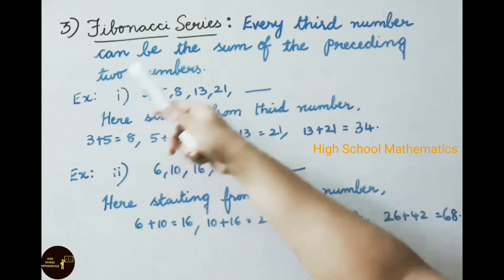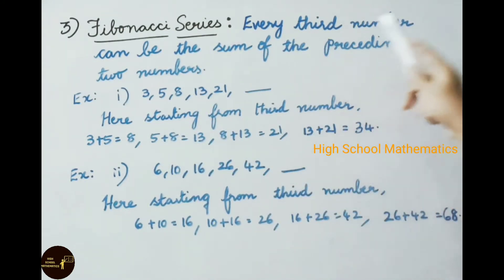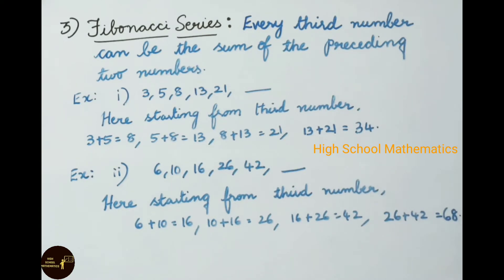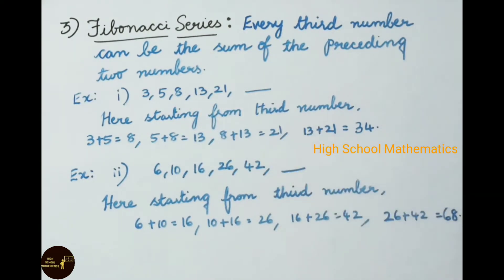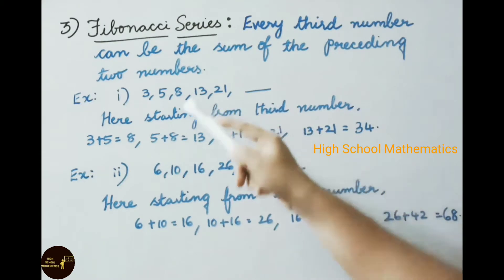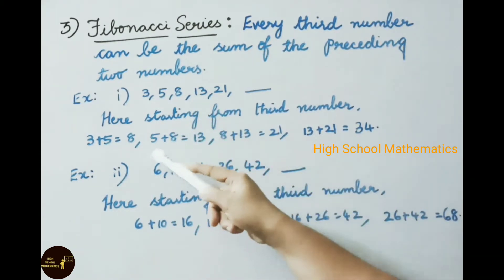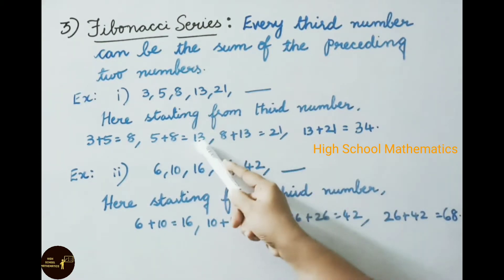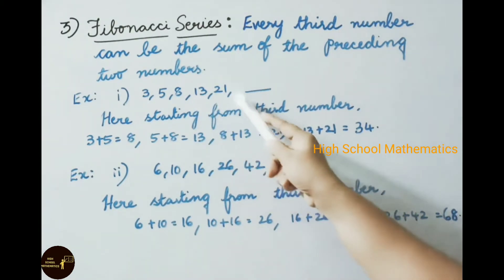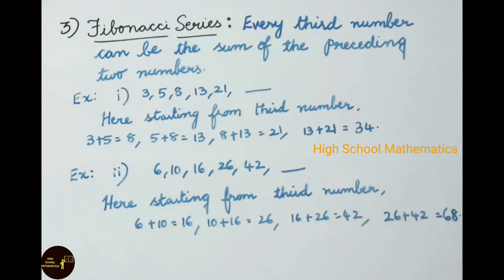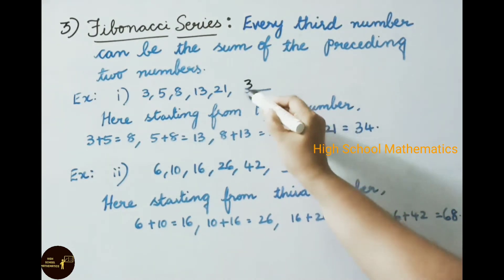Now the third type: the Fibonacci series, where every third number is the sum of the preceding two numbers. Example: 3, 5, 8, 13, 21 — find the next term. Starting from the third number: 3 plus 5 is 8, 5 plus 8 is 13, 8 plus 13 is 21. Now 13 plus 21 is 34. The next term is 34.